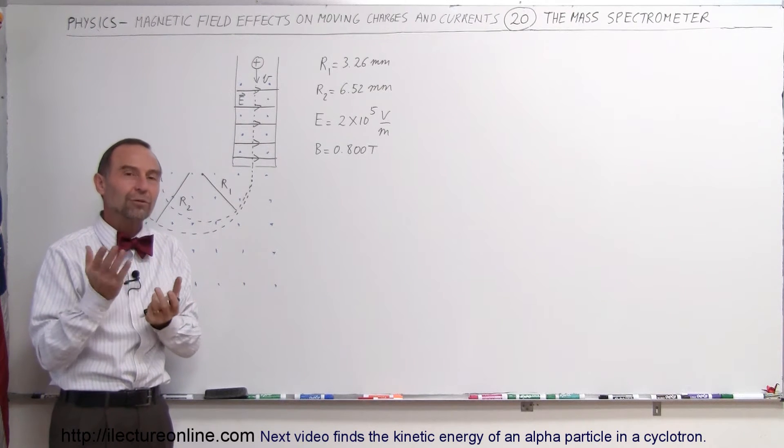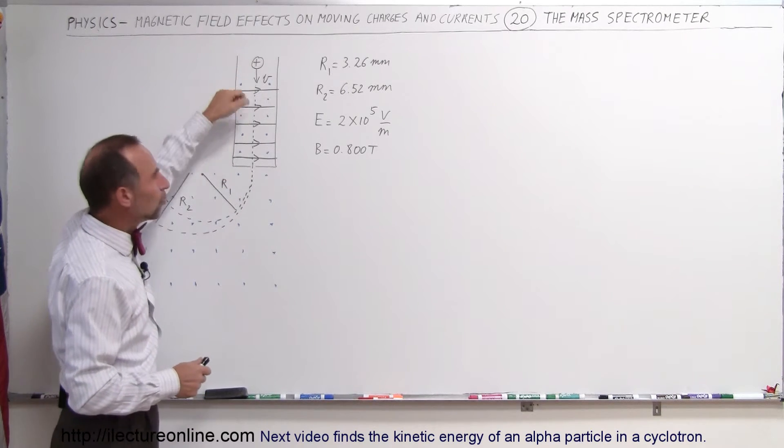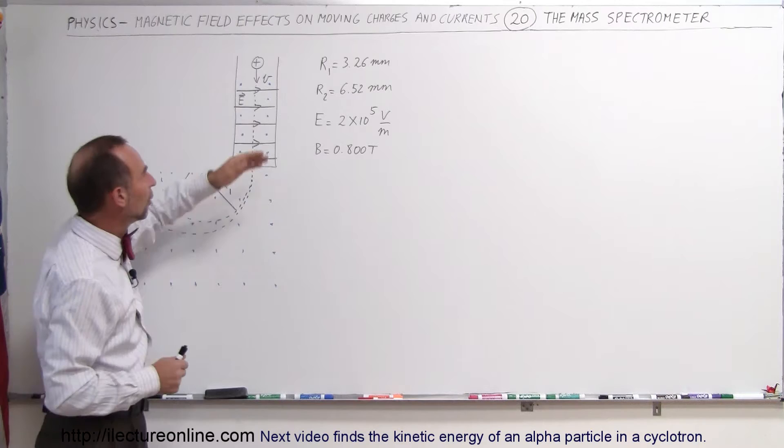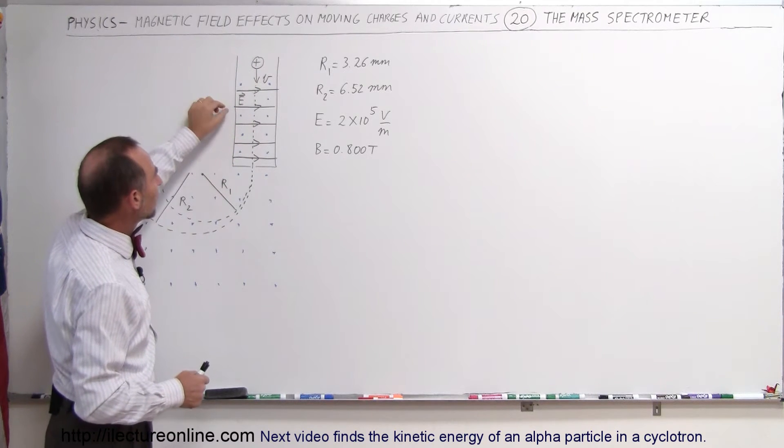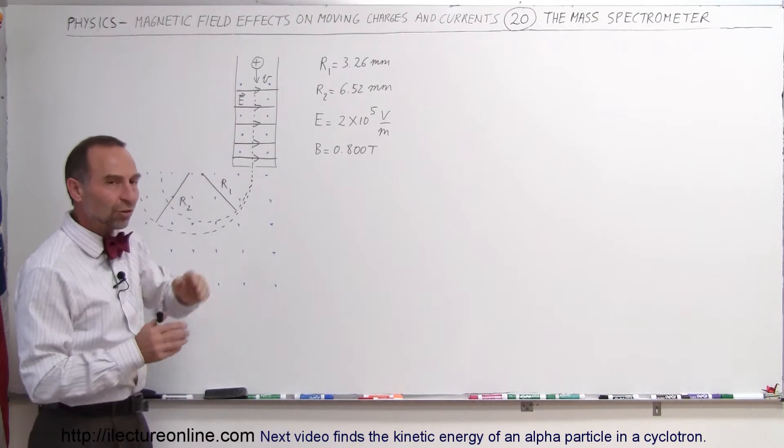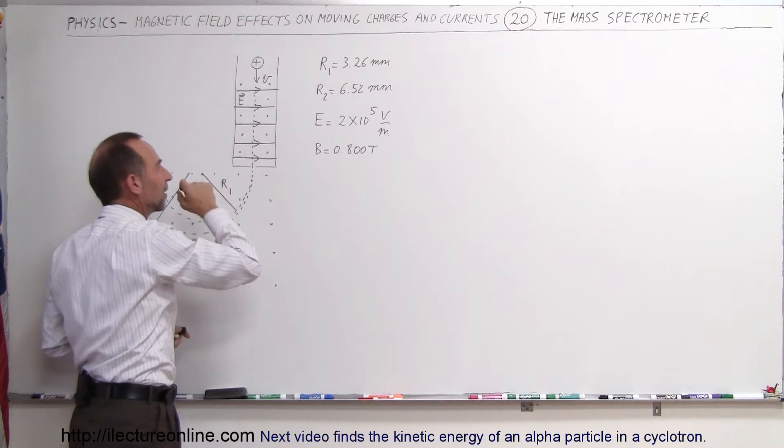It allows you to figure out what isotope you're dealing with. So different isotopes usually having the same charge being shot through a velocity selector and notice that the electric field is adjusted in such a way that only particles with a certain velocity will make it out of the velocity selector.